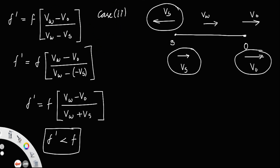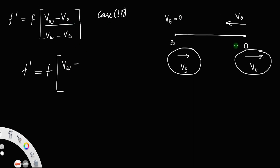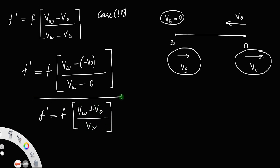Let us take one more case — Case 3: the source is at rest, so V_S equals 0, and the observer is moving toward the source. Using the reference formula and substituting V_S = 0 and replacing V_O with minus V_O (since observer moves toward source), F dash = F times (V_W plus V_O) divided by V_W. In this way you can write all other cases by taking the reference case and adjusting the signs.